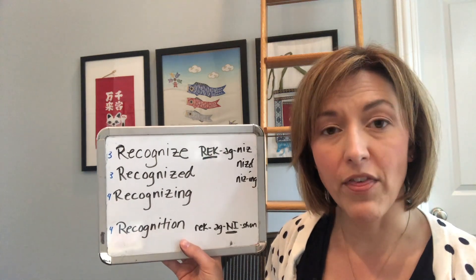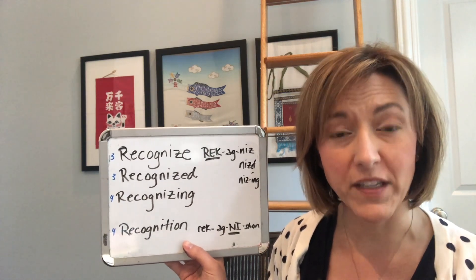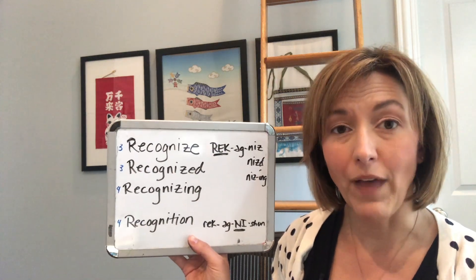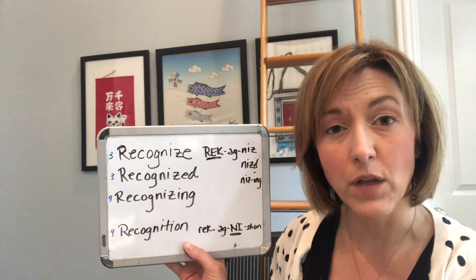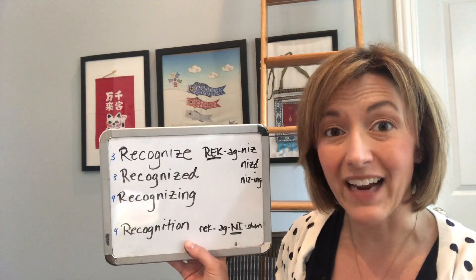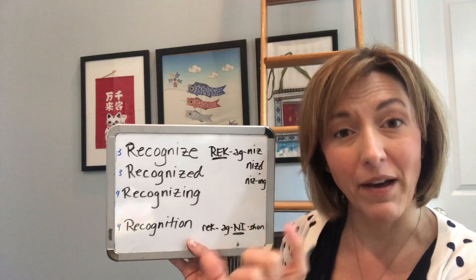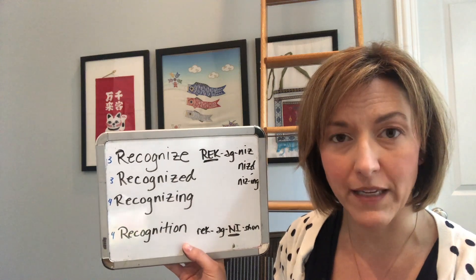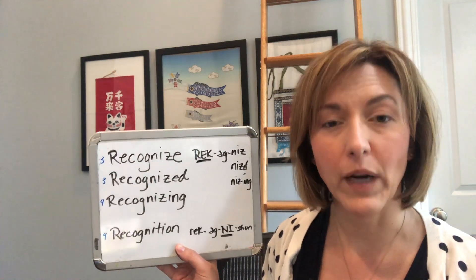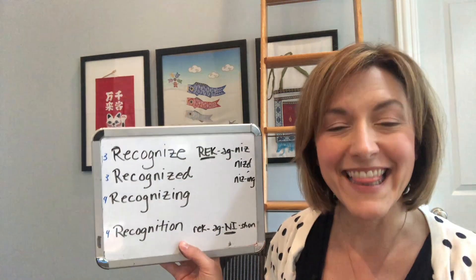You will hear slight differences in the syllables and the lengths of the vowels because, as words get longer and have more syllables, we have to shorten some of the vowels — even though it's exactly the same vowel — because we only have a certain amount of time to say the word. So: recognize, recognized, recognizing.